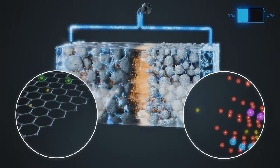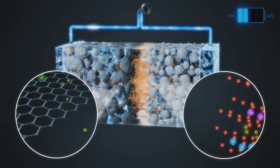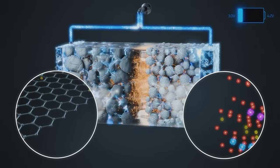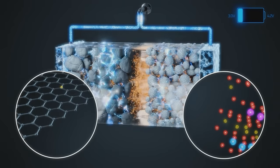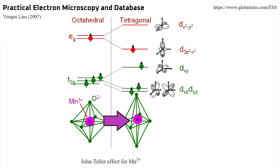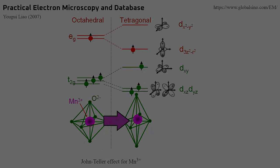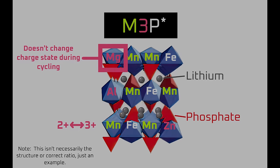The short story is that batteries are complex, multi-scale, multi-physics systems, which means there's always demons in the machine that have to be exercised to bring a new chemistry to market. So today I'm going to explain what those specific demons are for LMFP and how CATL may have solved them with their M3P chemistry.